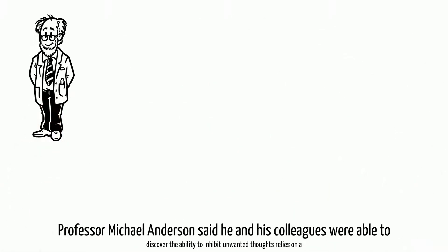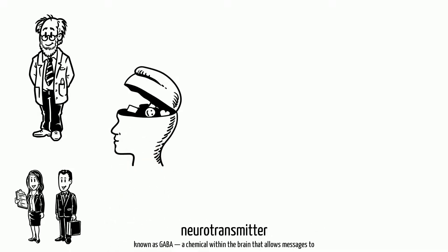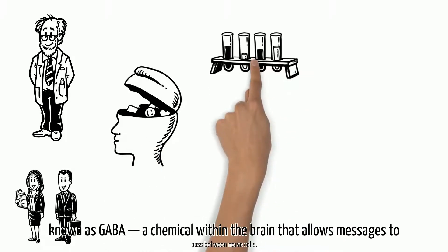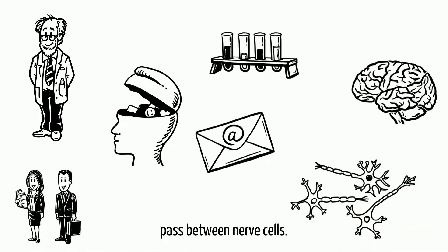Professor Michael Anderson said he and his colleagues were able to discover the ability to inhibit unwanted thoughts relies on a neurotransmitter known as GABA, a chemical within the brain that allows messages to pass between nerve cells.